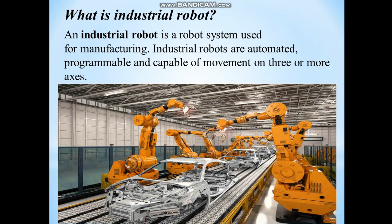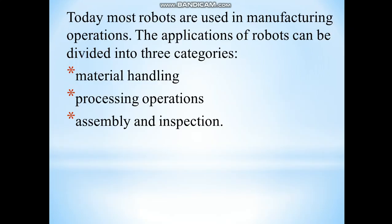Now, what is an industrial robot? An industrial robot is a robot system used for manufacturing. Industrial robots are automated, programmable, and capable of movement on three or more axes. Today most robots are used in manufacturing operations. The applications of robots can be divided into three categories: material handling, processing operations, and assembly and inspection.